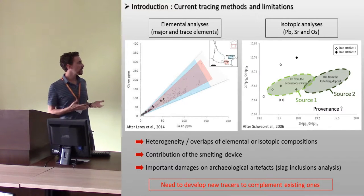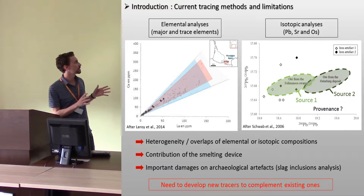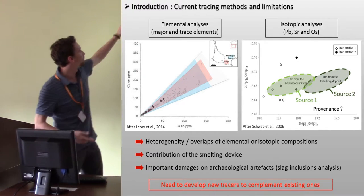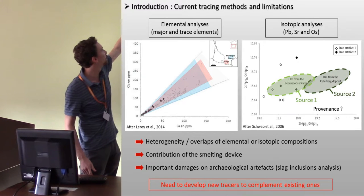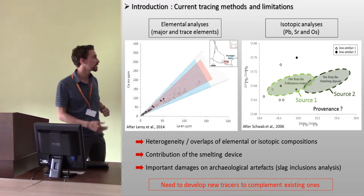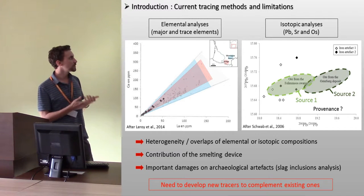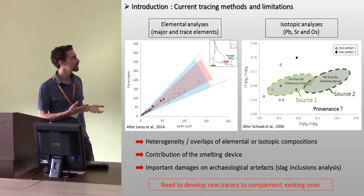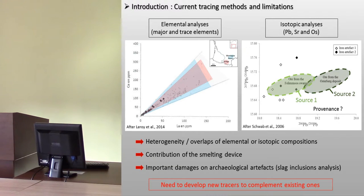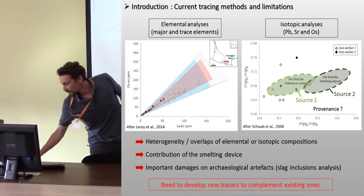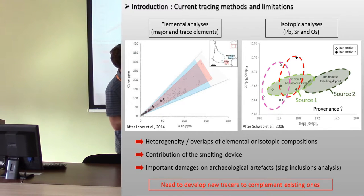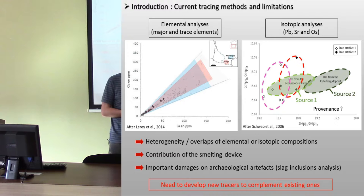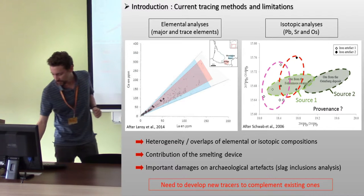For example, we can have overlaps of composition between distinct regions. Here we can see the overlapping composition of cerium and lanthanum from distinct regions. We can also have heterogeneity of the materials. In this example, despite the lead isotopic composition allowing the distinguishing of two potential sources, the composition of the two artifacts is really heterogeneous, so we can't suggest any provenance link for this object.